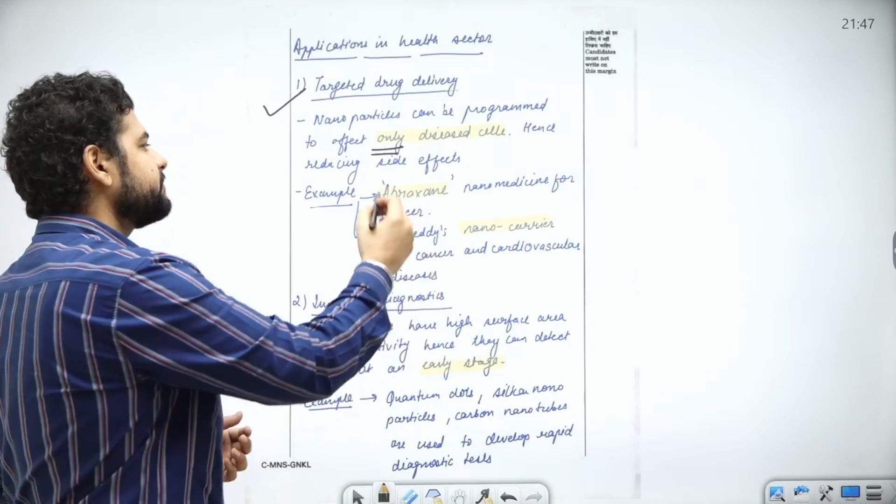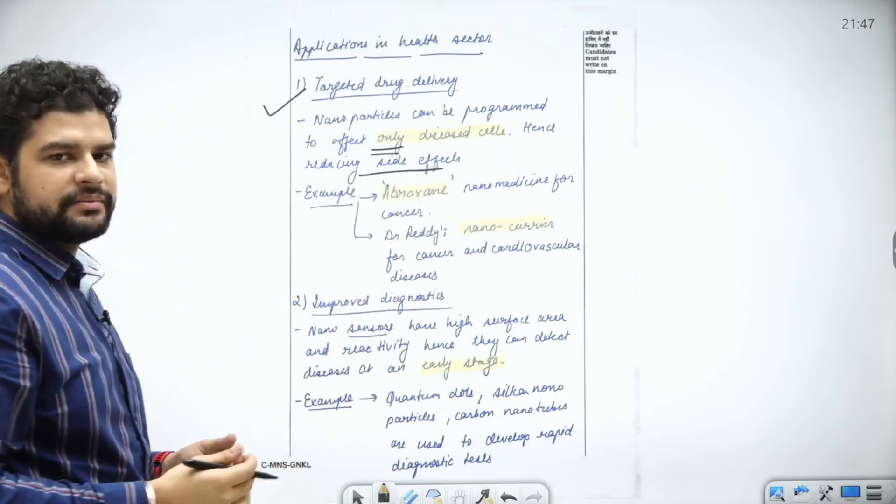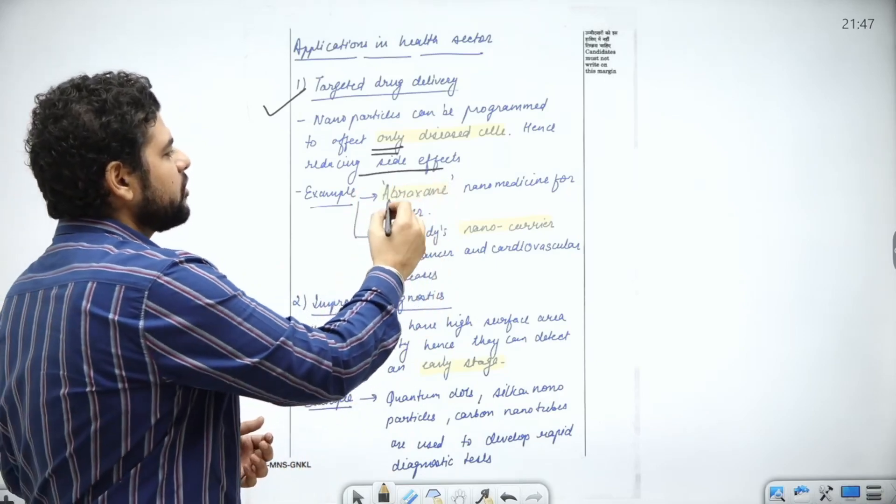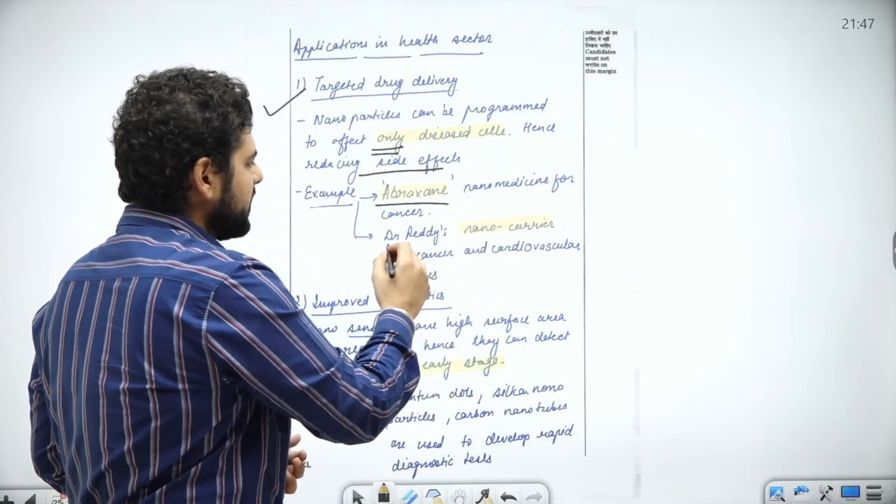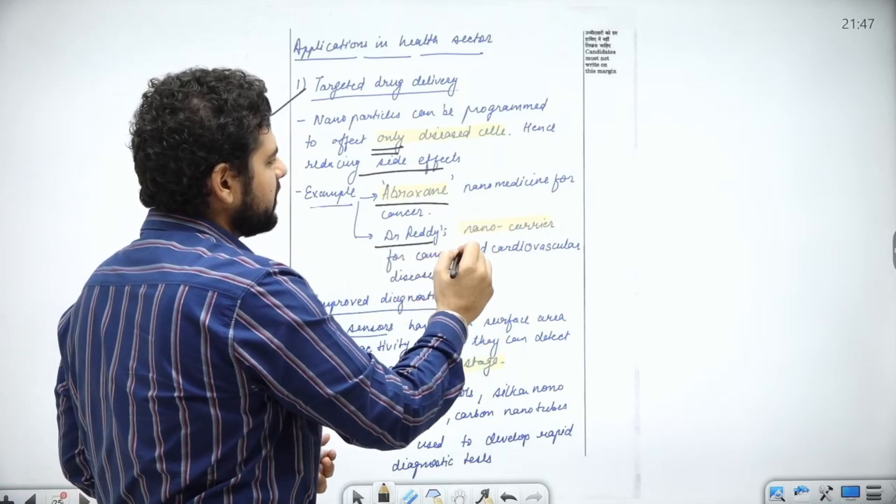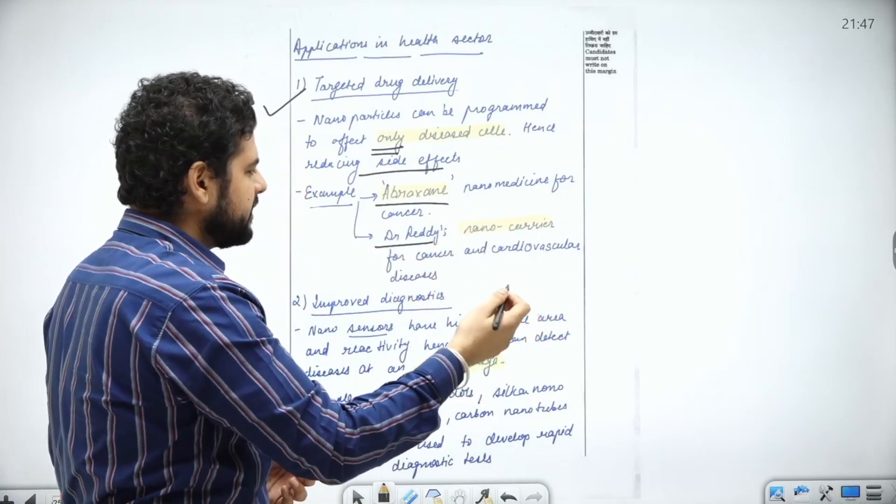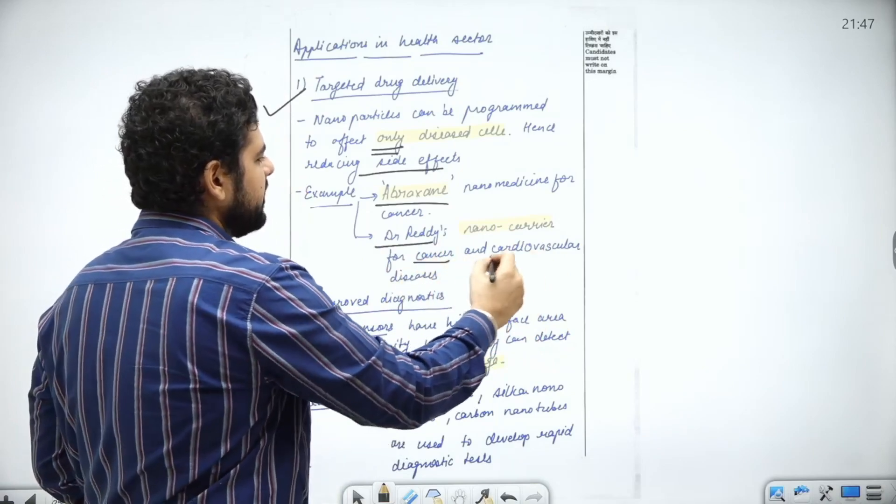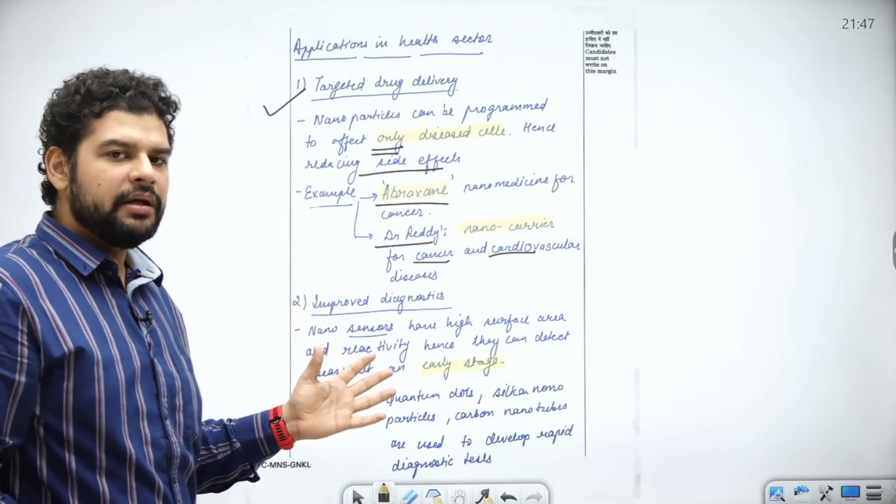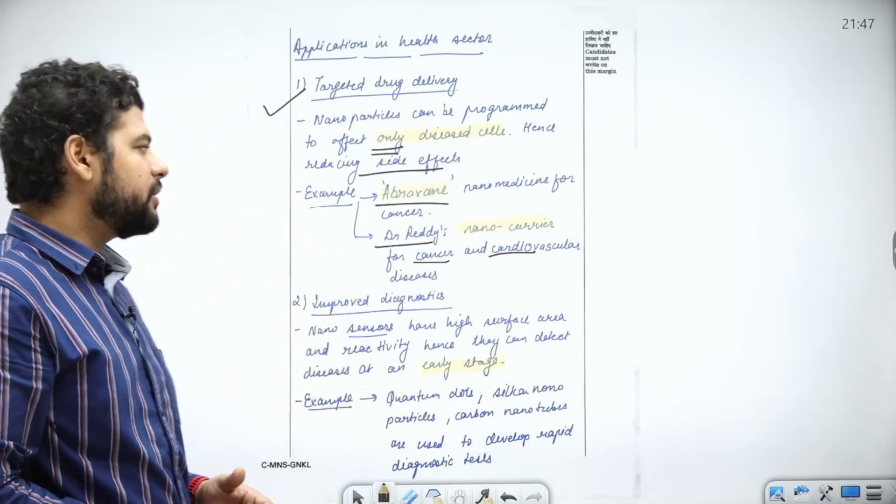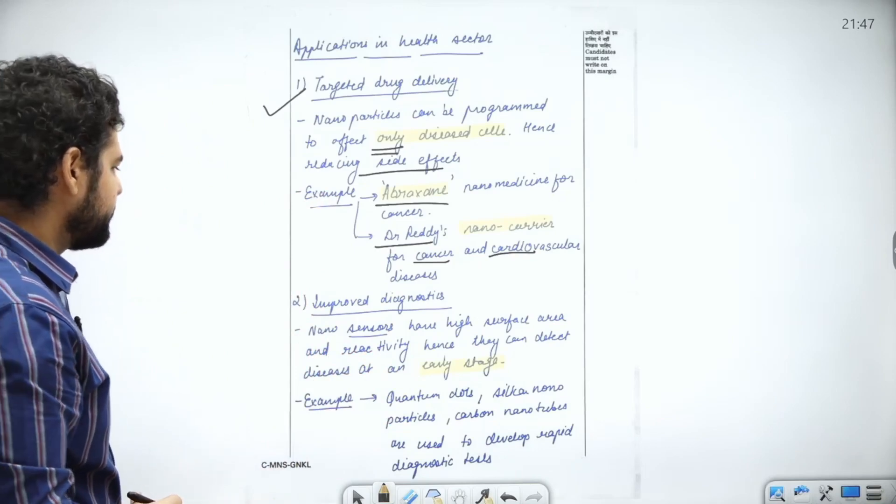If you program the nanotechnology to target directly the cells, you can have minimum side effects. For example, there are drugs called Abraxane, which is a nanomedicine for cancer. There is a nanocarrier developed by Dr. Reddy's Laboratory for cancer and cardiovascular disease. I've taken both international and Indian examples.